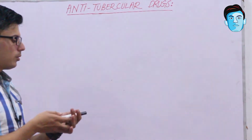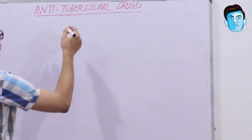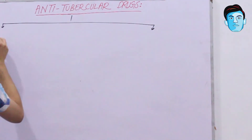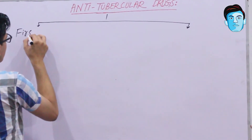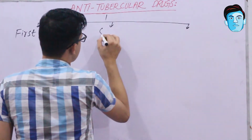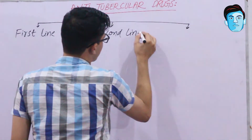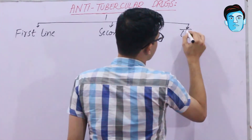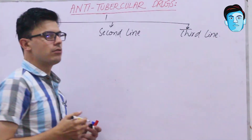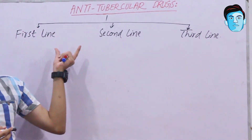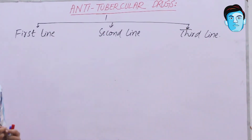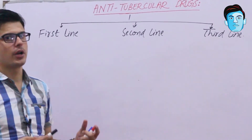Now let's talk about the anti-tubercular drugs. Anti-tubercular drugs are broadly classified into three major groups: first-line anti-tubercular drugs, second-line anti-tubercular drugs, and third-line anti-tubercular drugs. For each class we have particular drugs, and we will be going through certain mnemonics so that you can easily recall them.